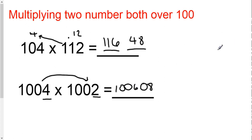And there you have it, the multiplying two numbers both over a hundred's trick, which can be found on page 16 of your workbook. Good luck with that.